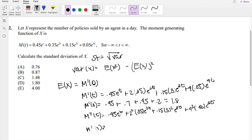This becomes 0.45 plus 1.4 plus 1.35 plus 0.8, which is equal to 4.